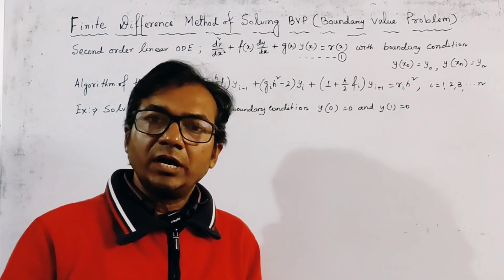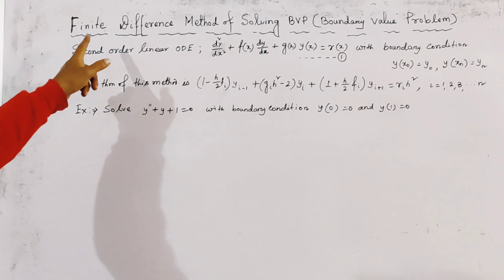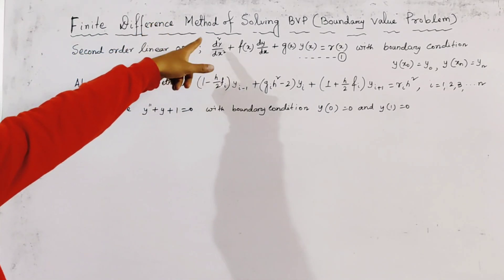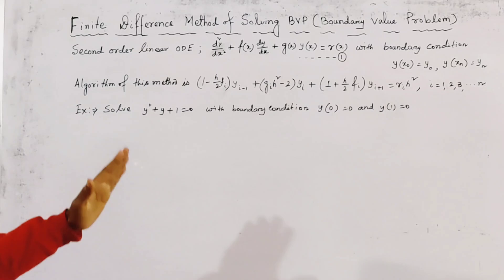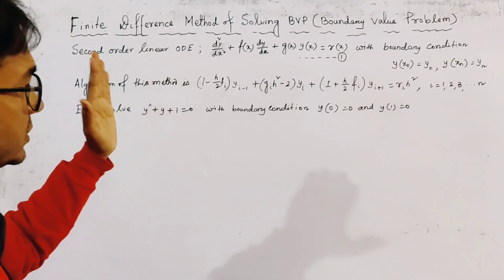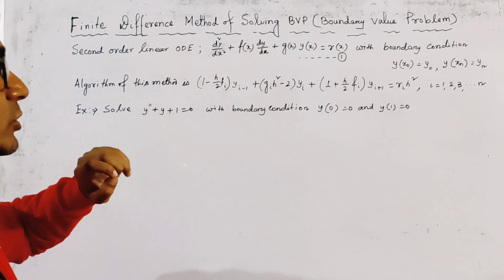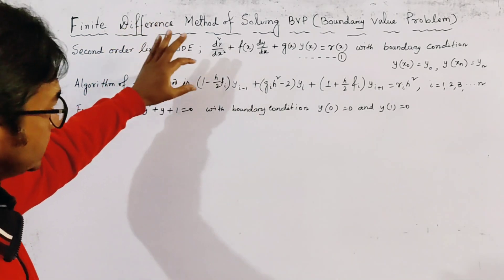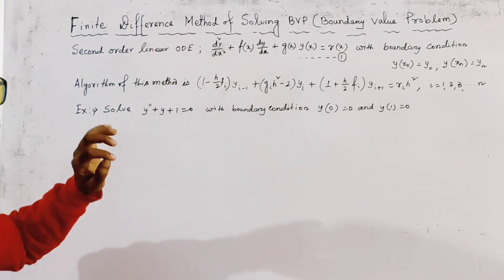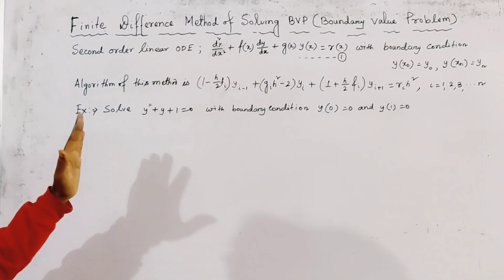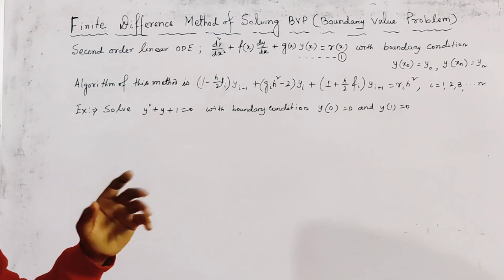This lecture is the second part, or Part B, of the finite difference method for solving boundary value problems. In the previous lecture, we discussed the derivation of the finite difference method, and this is the algorithm we already wrote. Here we solve a particular example.